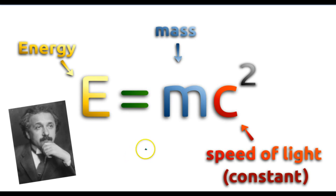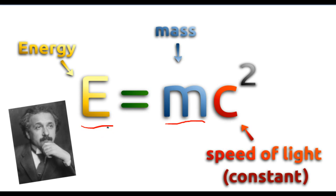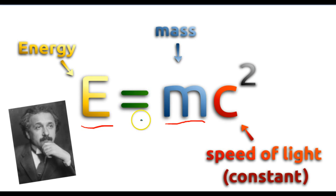What E equals mc squared means is that the mass of an object is nothing more than huge amounts of energy squeezed together. In the world of physics and science, energy and mass are basically the same thing. So if we work this process backwards, we can unlock insane amounts of energy from very small amounts of mass.